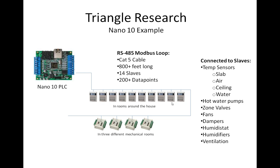We're also measuring water temperatures of different storage tanks. The output devices are controlling the hot water circulation pumps, the zone valves, fans, dampers, humidistats, humidifiers, and ventilation. So the Nano 10 collects all of the data from this network, goes through its logic sequence, and then turns all the appropriate things on or off, depending on what needs to be done.